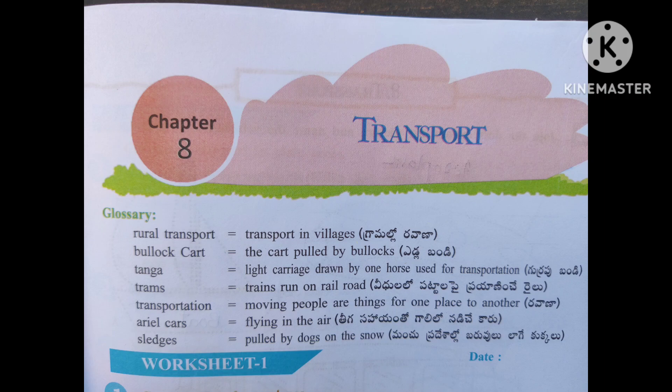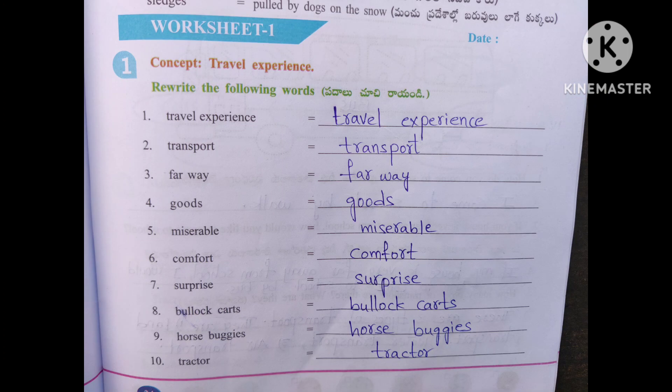4th Class EVS Lesson 8 - Transport Workbook Glossary. Rural Transport: Transport in villages. Bullock Cart: a cart pulled by bullocks. Thanga: a light carriage drawn by one horse used for transportation. Trams: trains that run on railroad. Transportation: moving people or things from one place to another. Air Cars: flying in the air. Sledges: pulled by dogs on the snow.